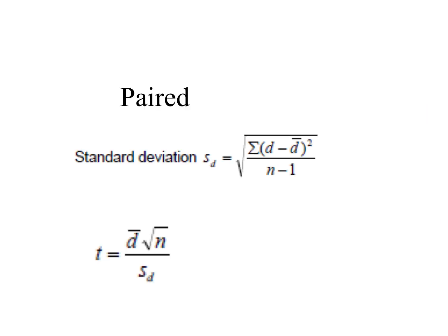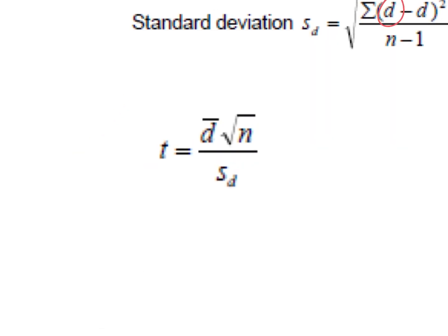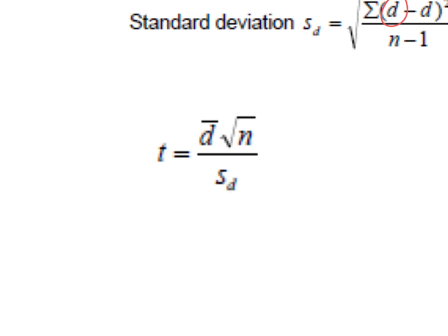You would use the paired t-test if on the same field you recorded the average growth rate, and then applied a fertiliser to that same field so you can compare growth rate before and after. Both sets of data are linked to the same individuals. For the paired t-test, you calculate the standard deviation of the differences (D) between the before and after values for each repeat — not the standard deviation of all the growth rates. D-bar is the average of the differences, n is how many pairs you had, and s is the standard deviation of your differences.